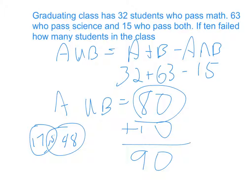48 students who passed just science, and then the 15 that passed them both. My 10 goes here. All in total, 90 students.